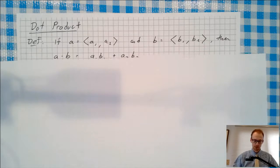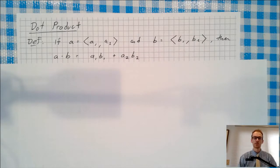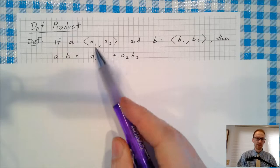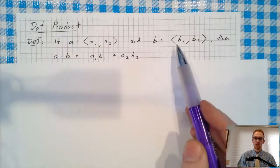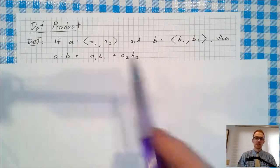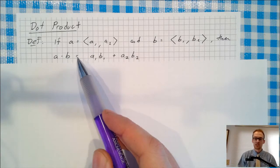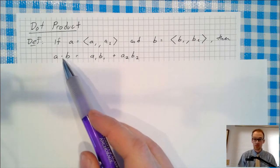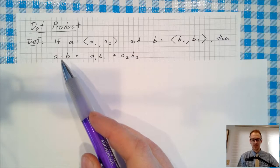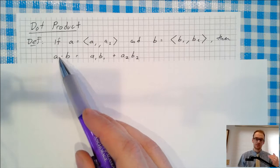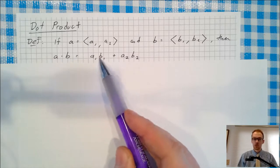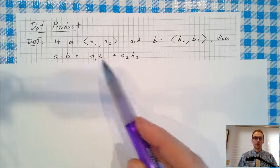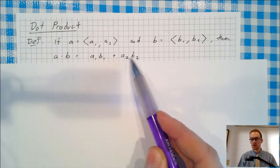So the dot product of two vectors is defined as follows. If A is the vector A1, A2, those are the x and y components of A, and B is B1, B2, then you can calculate A dot B. I know you're used to a dot being multiplication, but with vectors it's not multiplication, it's the dot product. So A dot B equals, you just multiply the x components and then you add that to the product of the y components.